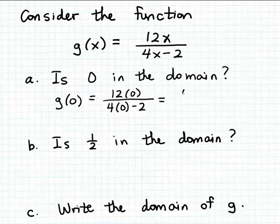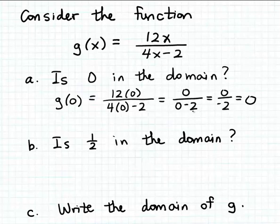12 times 0 in the numerator is 0. 4 times 0 is 0 minus 2, and 0 minus 2 is minus 2. So we get 0 divided by minus 2, which reduces to 0. So g of 0's matching output turns out to be 0 itself. But 0 is a real number, so that input gives a real number matching output value, and so 0 is in the domain. The answer to this question is yes.